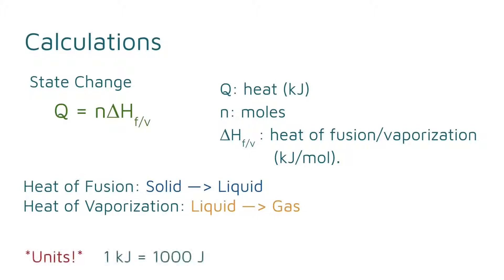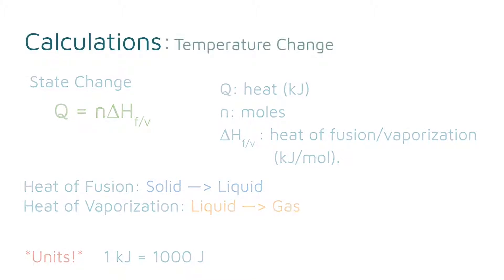When using this equation, you must know which phase change you're working with so you can use the right constant. Be careful with your units — heat of fusion or heat of vaporization are typically given in kilojoules, so your calculations will result in a heat with kilojoule units. You may need to convert it to joules.